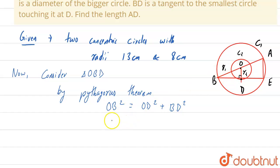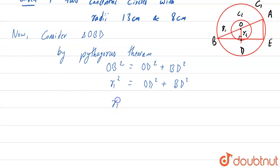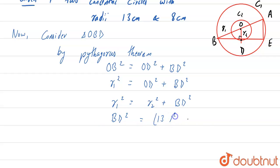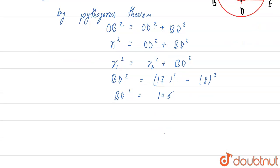You can see that OB is the radius of the upper circle, so we write r1². And OD is also given — it is the radius of the small circle, so we write r2². Therefore r1² equals r2² plus BD². Now BD² equals r1² minus r2², which gives BD² equal to 18² minus 8² = 324 minus 256 = 105. So BD equals √105.